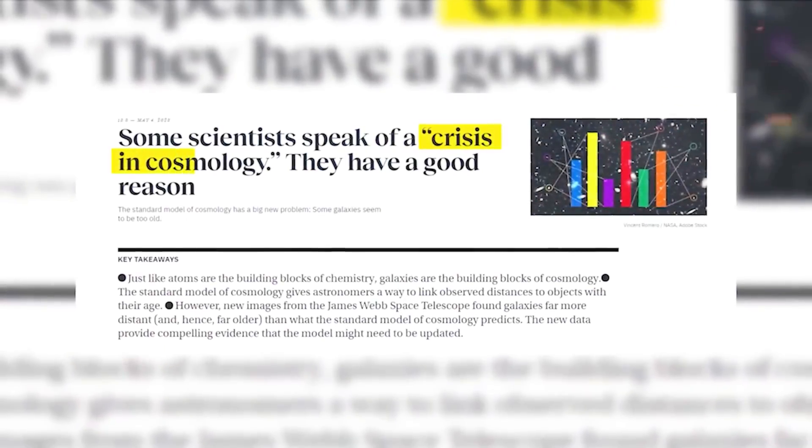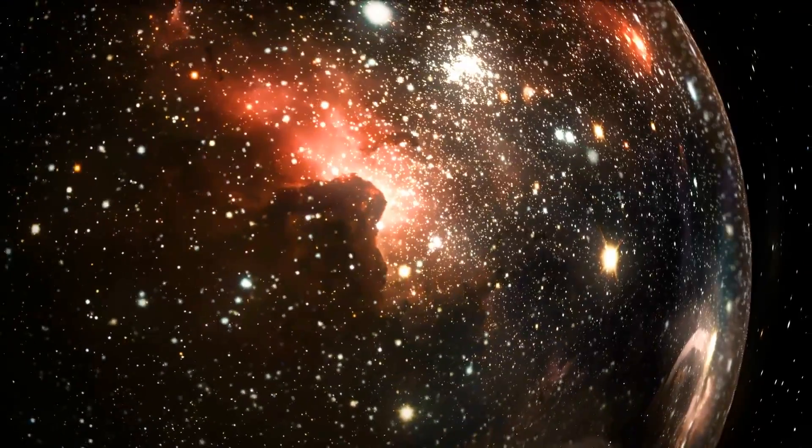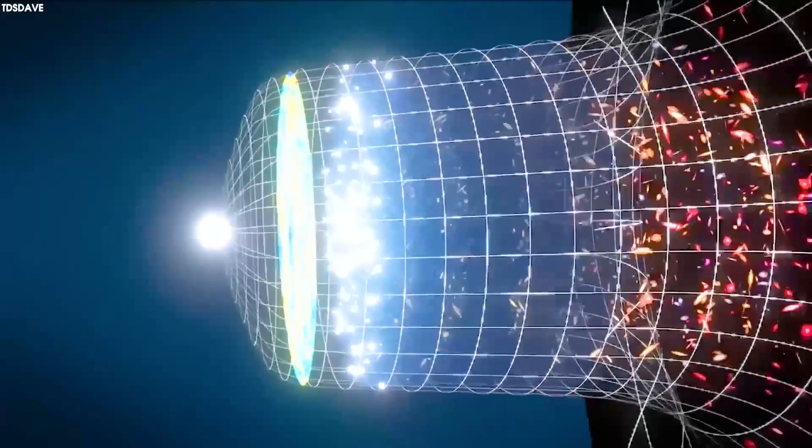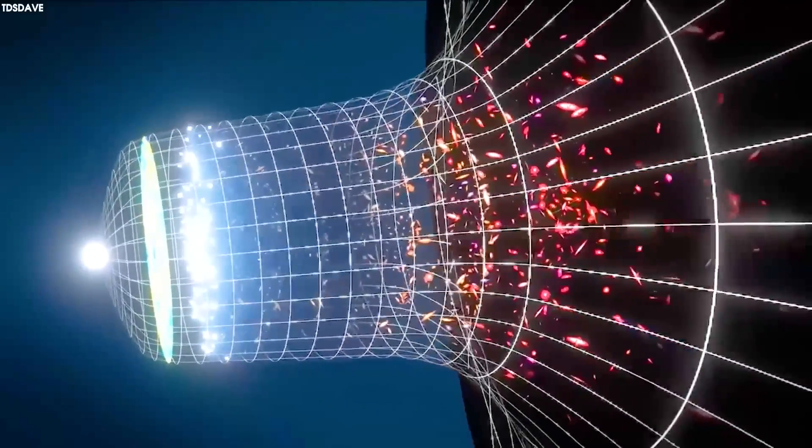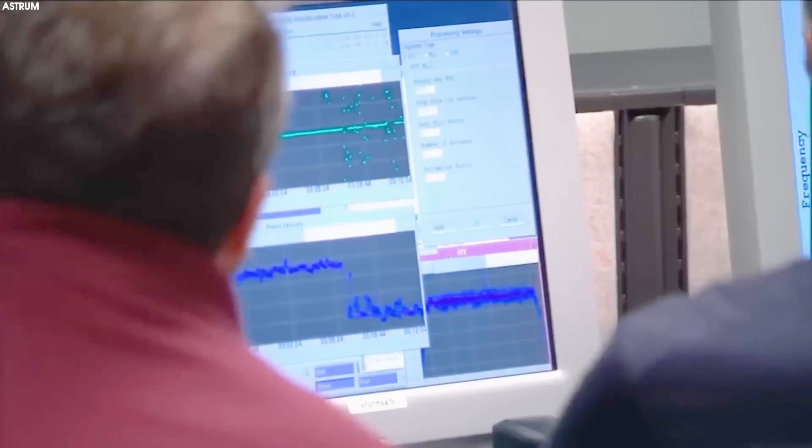You may have heard about the crisis in cosmology. The main reason of the cosmological crisis is that different methods for determining the age of the universe are giving different results and cosmologists have no clue why.